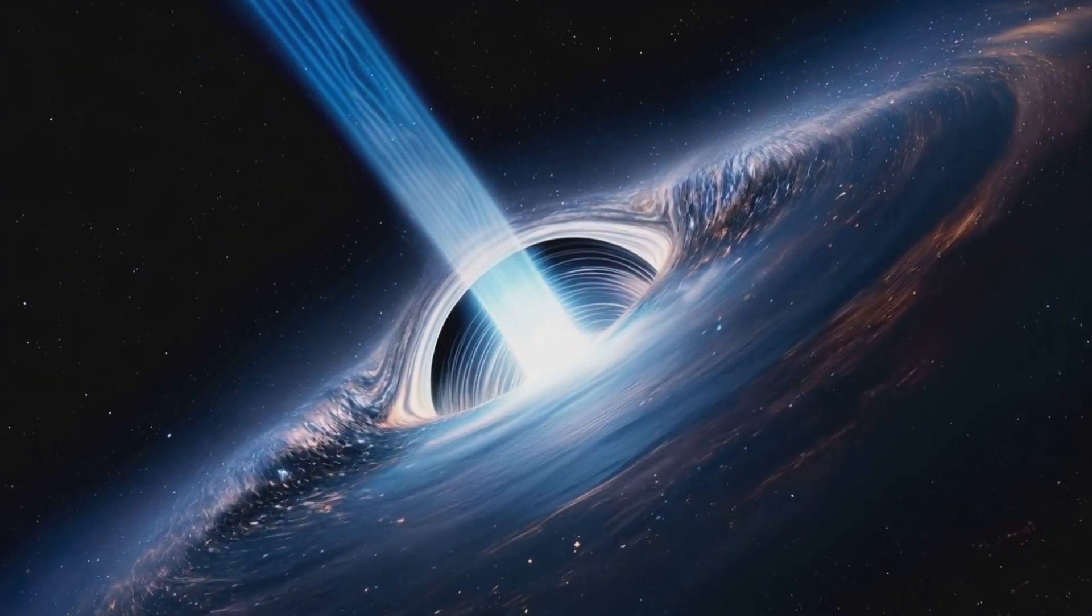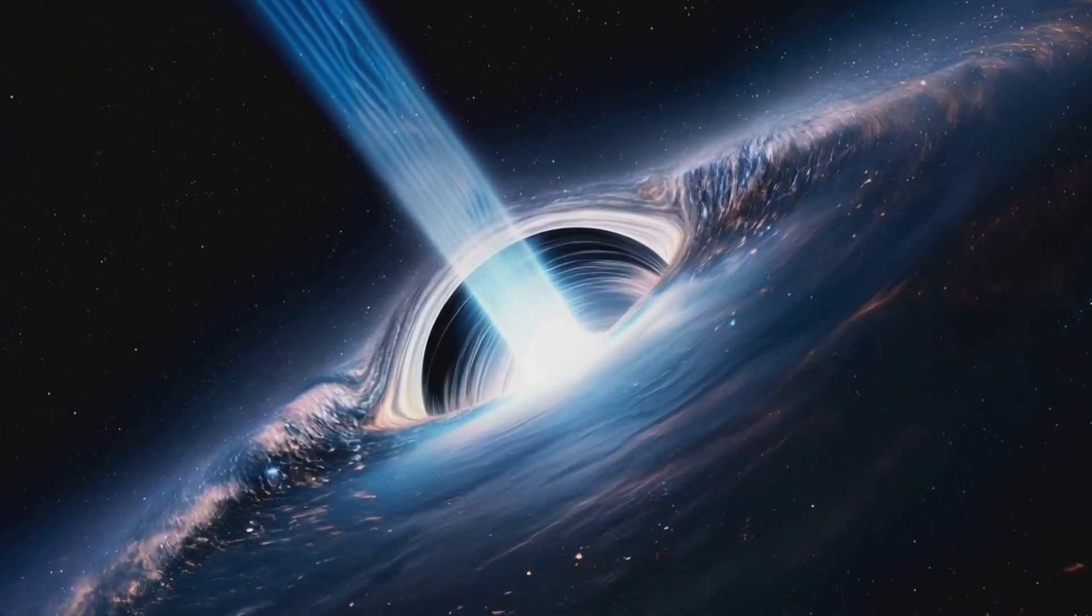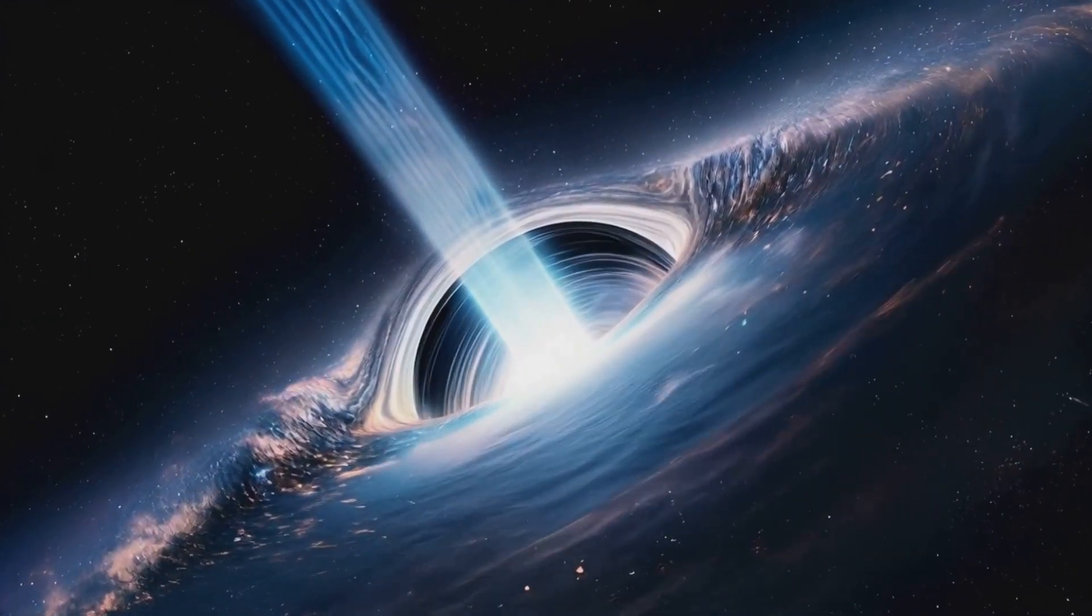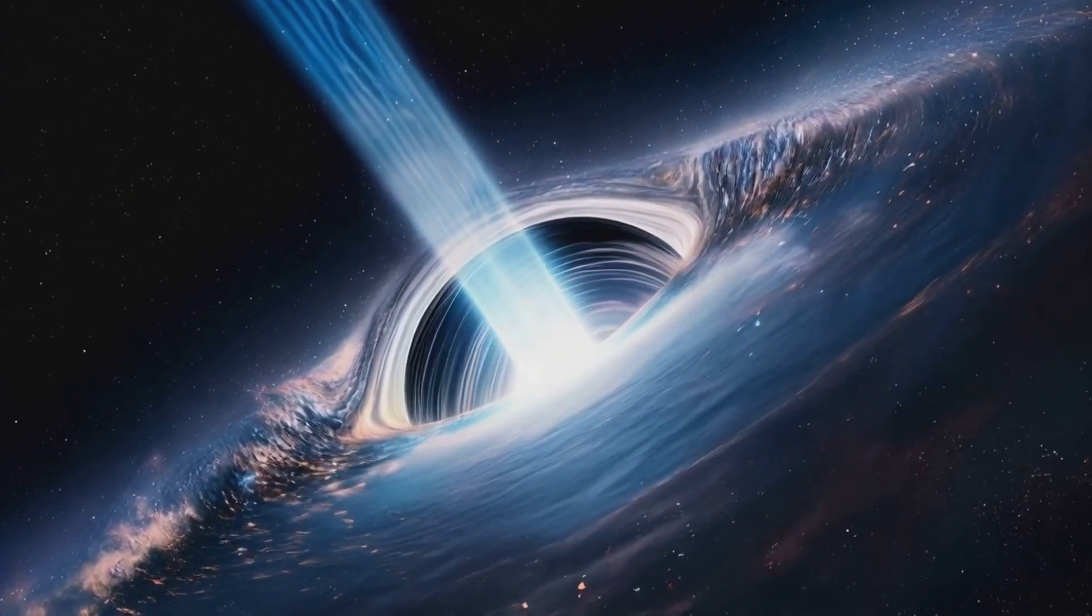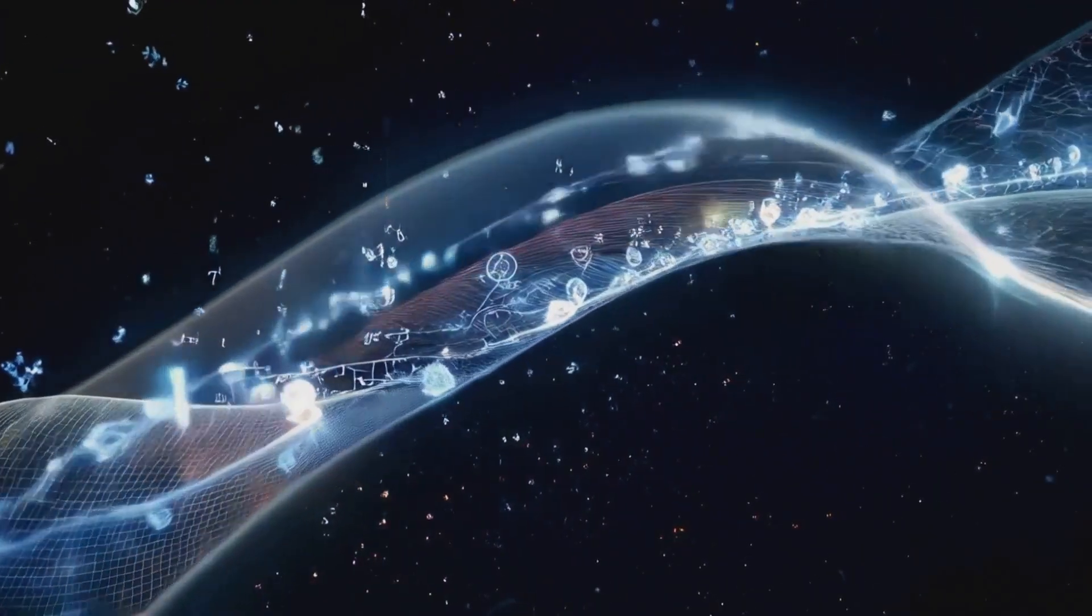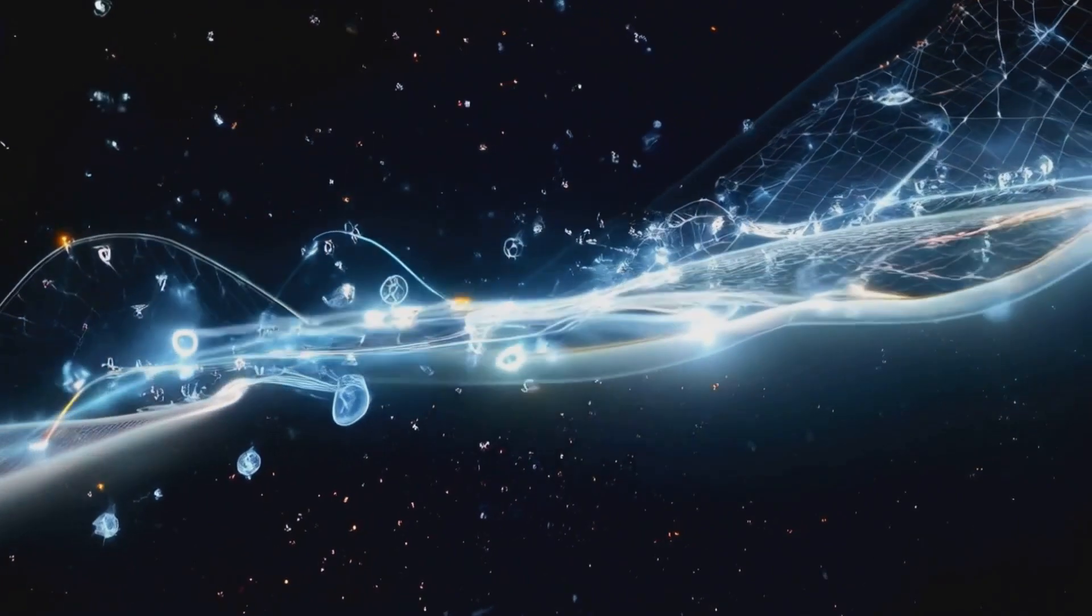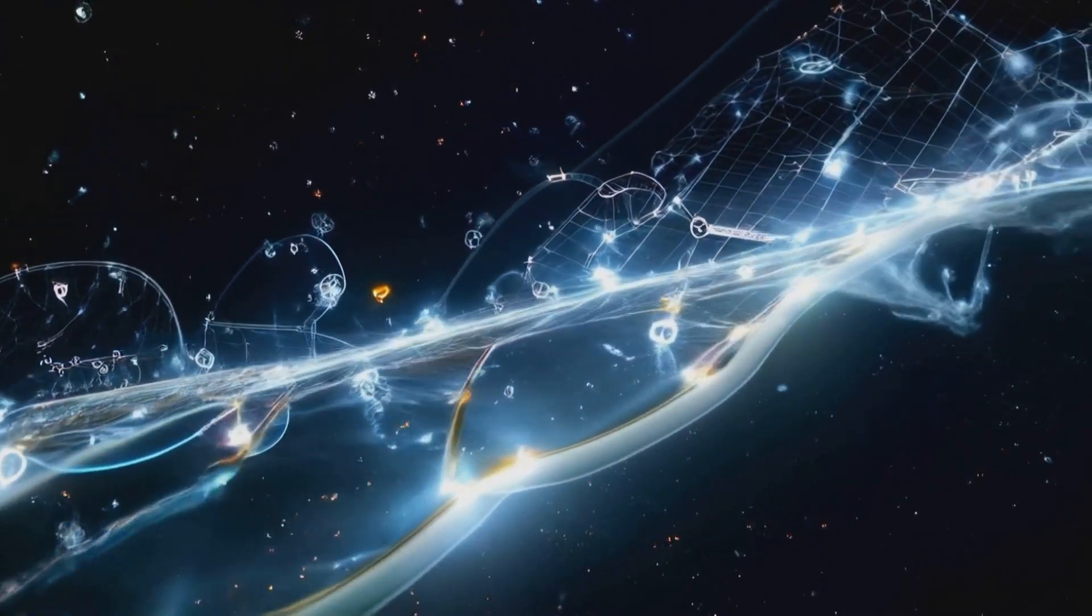The singularity and event horizon form a light clock with Hawking radiation bouncing between them, defining the passage of time. The flow of information sculpts the curvature of spacetime, linking quantum scales to vast cosmic structures.